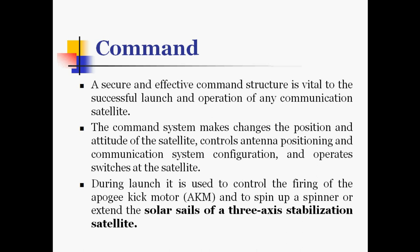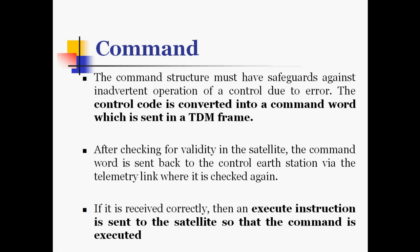Another component of TTC&M is the command system. A secure and effective command structure is vital to the successful launch and operation of any communication satellite. The command system makes changes to the position and attitude of the satellite, controls antenna positioning and communication system configuration, and operates switches at the satellite. During launch, it is used to control the firing of the apogee kick motor and to spin up a spinner or extend the solar cells of a three-axis stabilized satellite. The command structure must have safeguards against inadvertent operation of a control due to error. The control code is converted into a command word which is sent in a TDM frame.